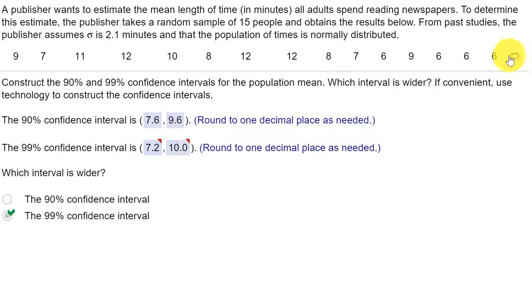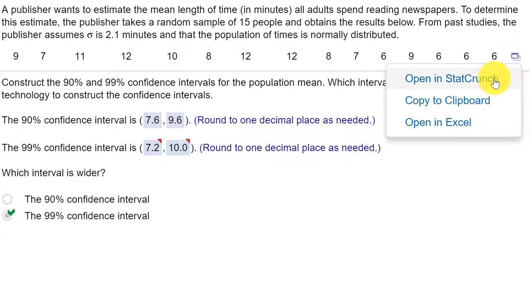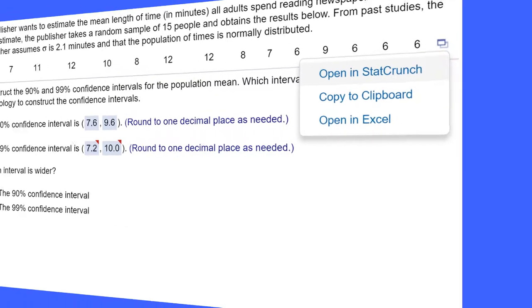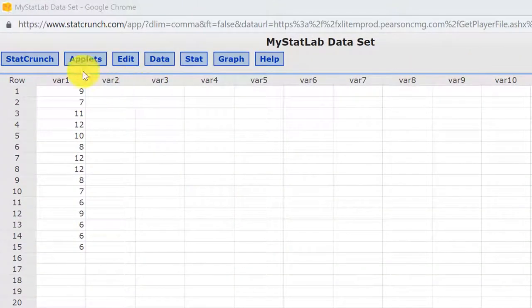We're going to do this using StatCrunch. We're going to click on the little blue rectangle to load this raw data instead of keying it in, and then open in StatCrunch. Okay, we're over here in StatCrunch.